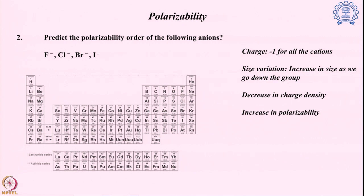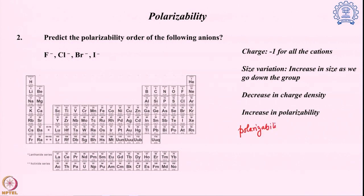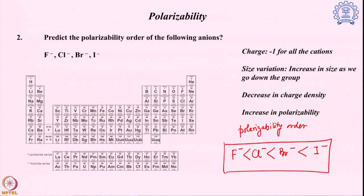If we have a very low charge density, control over electron distribution from the nucleus is pretty low, and that reflects in a higher polarizability. So the polarizability order for the halide ions is: iodide has the highest polarizability, then bromide, then chloride, and fluoride has the lowest. This follows the trend of increasing ion size down the group.